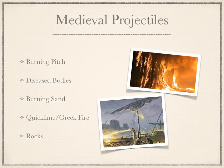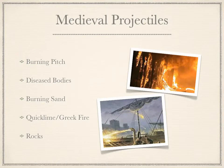The types of projectiles include the iconic burning pitch, which you hear about all the time. Of course there's rocks. The main three unique ones are diseased bodies, which was used during the Black Plague to spread it — actually the first form of biological warfare we have documented. And then there's Greek fire and quicklime, which is depicted in pictures as a weird fire-breathing thing, and was actually the first form of chemical warfare.